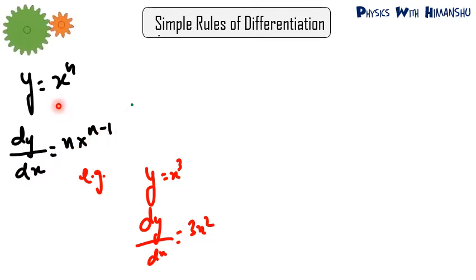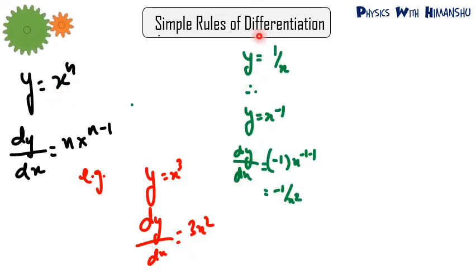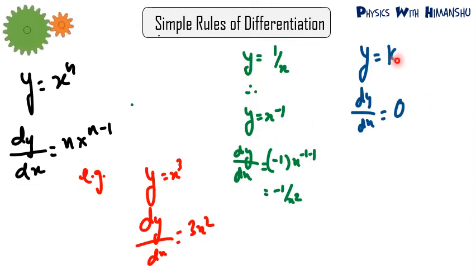On the place of y there can be x, and on the place of x there can be t — y and x are just quantities, you can substitute anything. For example, if y equals 1 by x, we write y equals x to the power minus 1. Then dy by dx is: minus 1 comes forward, subtract 1 from the power giving minus 2, so dy by dx equals minus 1 upon x squared. Also remember: differentiating a constant always gives 0, because if y is a constant then dy equals 0, so dy by dx equals 0.